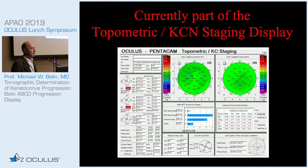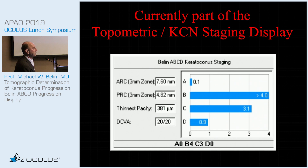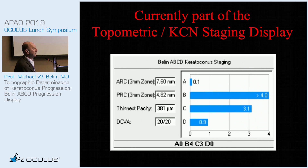This is currently part of the topometric keratoconic staging display. The ABCD portion shows the anterior radius of curvature taken from a 3 mm zone at the thinnest point, the posterior or back radius of curvature, the thinnest pachymetry, and the user-entered distance visual acuity. It gives both a graphical analysis and a classification. For example, you might have a normal anterior surface but prominent posterior ectasia, a moderately thin cornea, but normal distance visual acuity, because the anterior surface is still normal.